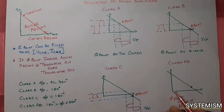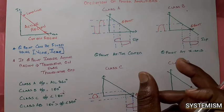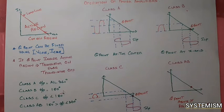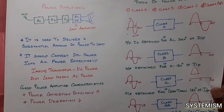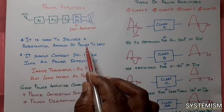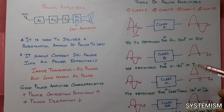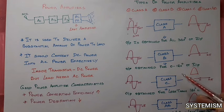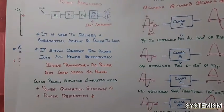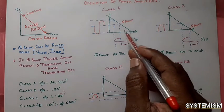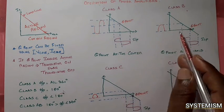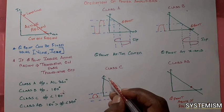In this video, we learned about what is a power amplifier — the last amplifier in a series of amplifiers is called a power amplifier, and it delivers a substantial amount of power to the load. A good power amplifier should have high power conversion efficiency and less power dissipation. There are four types: class A gives all 360 degrees, class B gives 180 degrees, class C gives less than 180 degrees, and class AB gives more than 180 but less than 360 degrees. I hope you loved this video. Thank you.